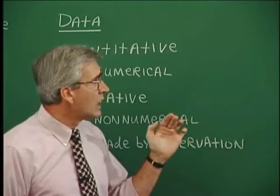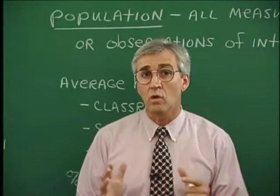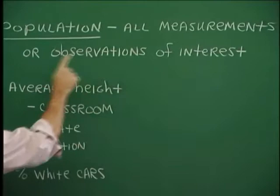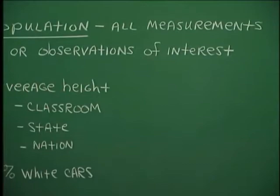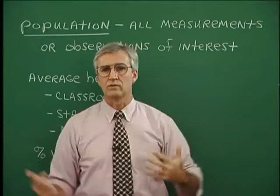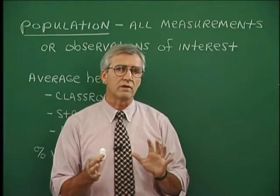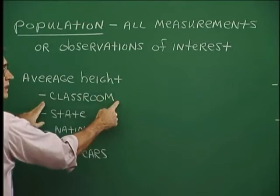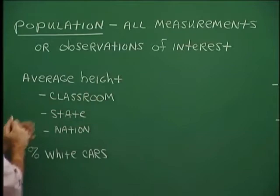We're going to talk about our vocabulary associated with statistics. One major word we talk about often in statistics is the notion of population. Population refers to all of the measurements or observations of interest in some problem. When we think about population, we often think about people within a country, state, or classroom. But in statistics, we're talking about measurements generally. So if we're talking about average height in a classroom, it would be the height of all the people in that classroom — those different height measurements would be the population, and from that population we can find the average.